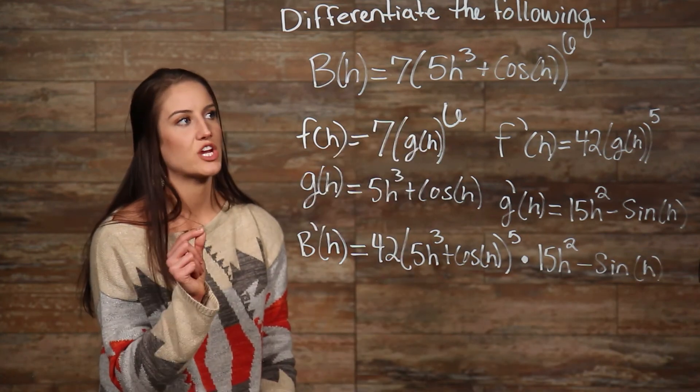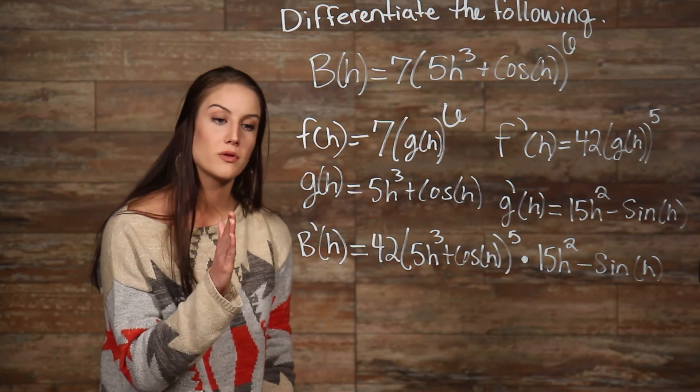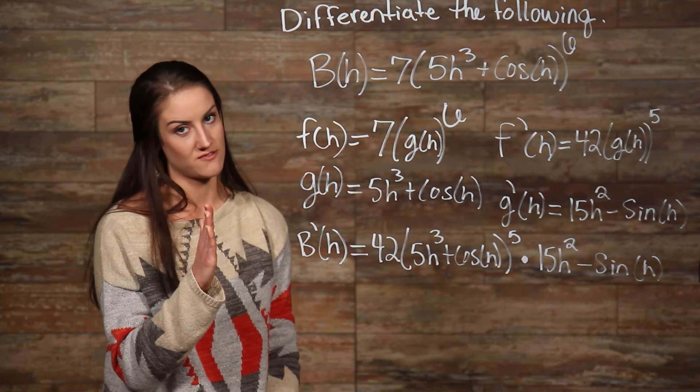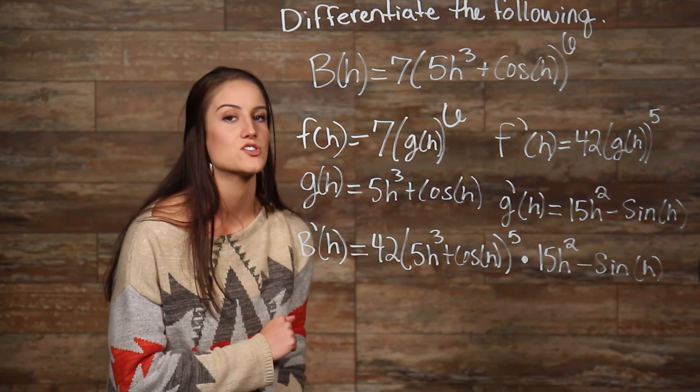Remember, when using the chain rule, try and identify two functions within the original function, then multiply times the derivative of that outside function times the inside function left alone times the derivative of the inside function.